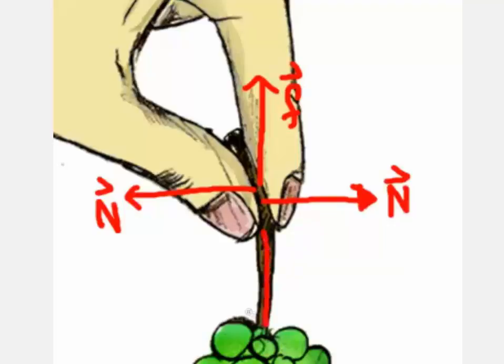Now we are only missing the weight of the grapes, so let's draw that in, and our free body diagram is complete.